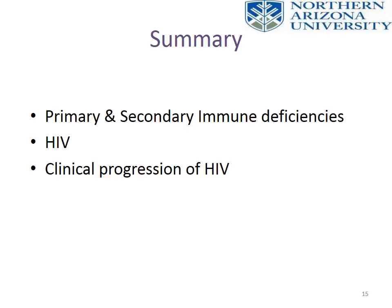In this lecture we talked about primary and secondary immune deficiencies. We covered a very specific example of secondary immune deficiency — HIV, human immunodeficiency virus — and characterized the clinical progression from HIV to AIDS.